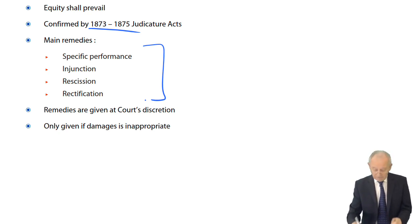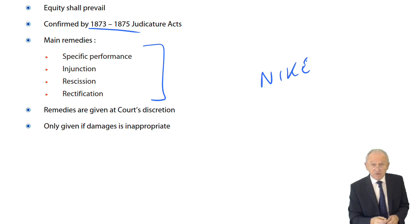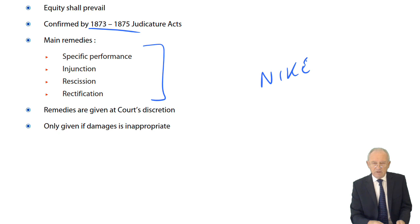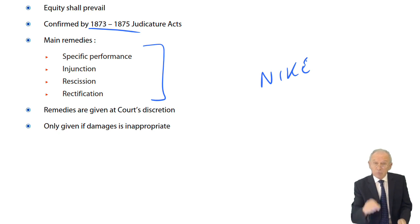Specific performance always reminds me of Nike and the advert for Nike, because specific performance says: 'Do it. Just do it.' So there I am trying to buy a vase and damages is insufficient. It goes to court, and the court looks at the person holding this vase and says, 'Transfer that vase — give that vase over.' I would be sorely tempted as I'm handing it over to drop it, so that if I can't have it, I don't see why anybody else should. But that's the principle: specific performance — just do it.